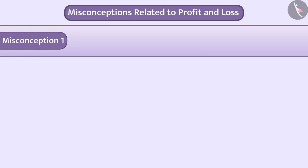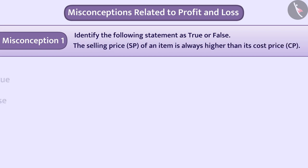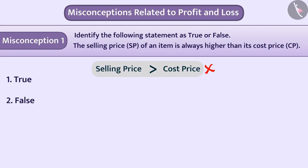Misconception 1: Identify the following statement as true or false — the selling price of an item is always higher than its cost price. Some students have the misconception that the selling price is always higher than the cost price, but this is a wrong understanding, so option 1 is the wrong answer. The selling price of an item may be equal to or less than its cost price.